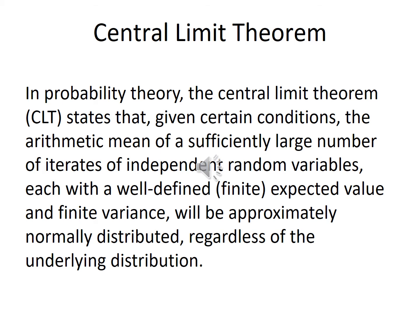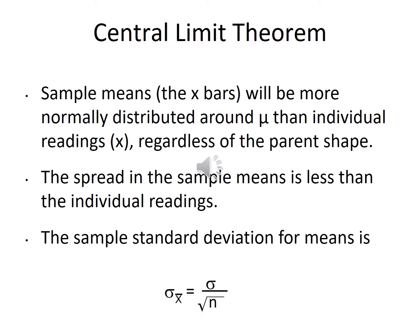Instead of looking at individual readings, we take a sample of about five, take the average of that, then take another sample of five and average that. We plot these averages rather than individuals. We can then calculate the sample standard deviation of the means — sigma x-bar — which equals the individual standard deviation divided by the square root of the sample size. This will always yield a normal curve.